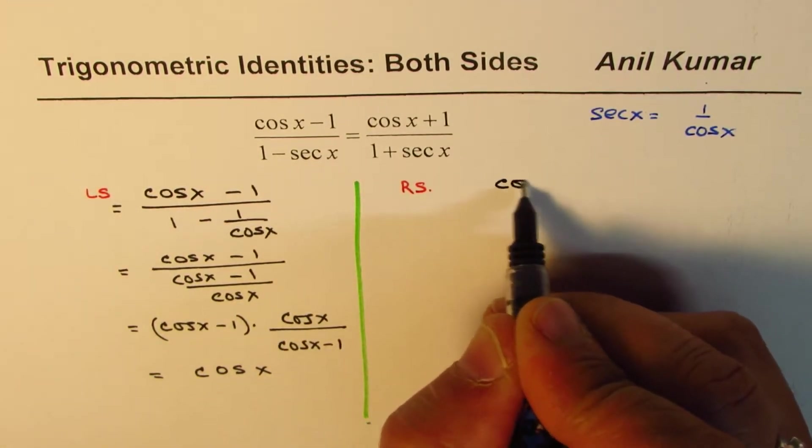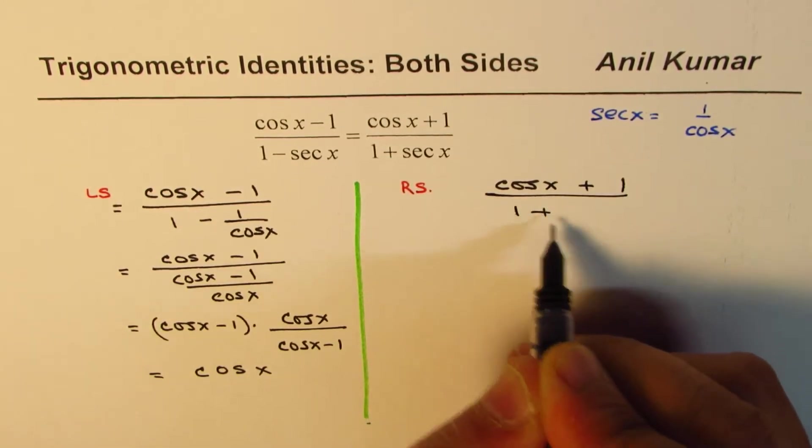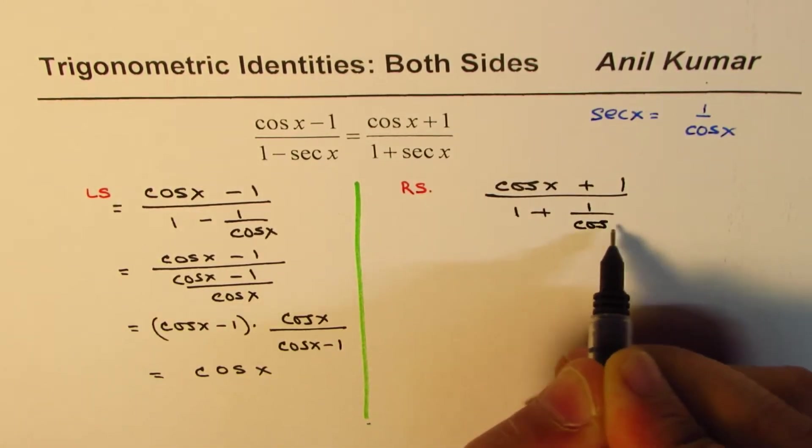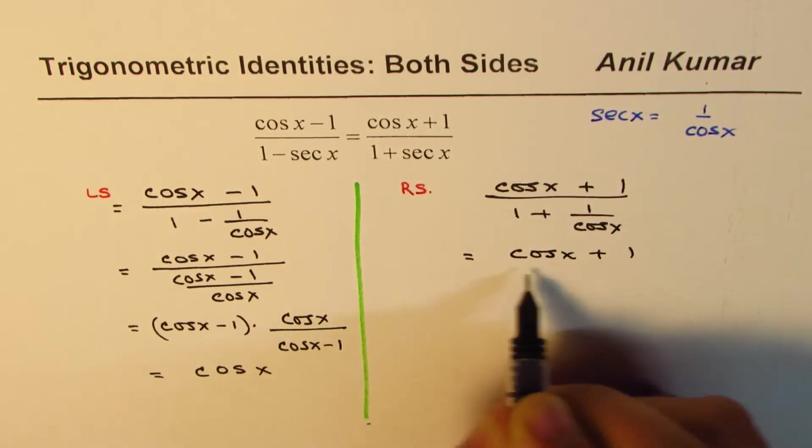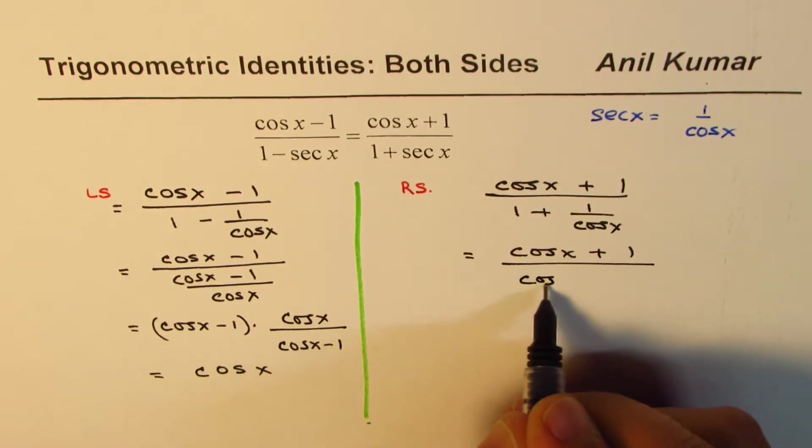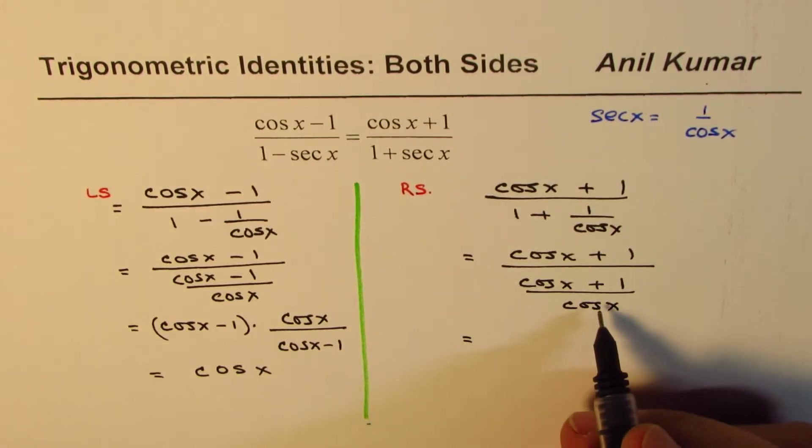We have (cos x + 1)/(1 + 1/cos x), which equals (cos x + 1) divided by (cos x + 1)/cos x. With a common denominator of cos x, that should give you cos x.